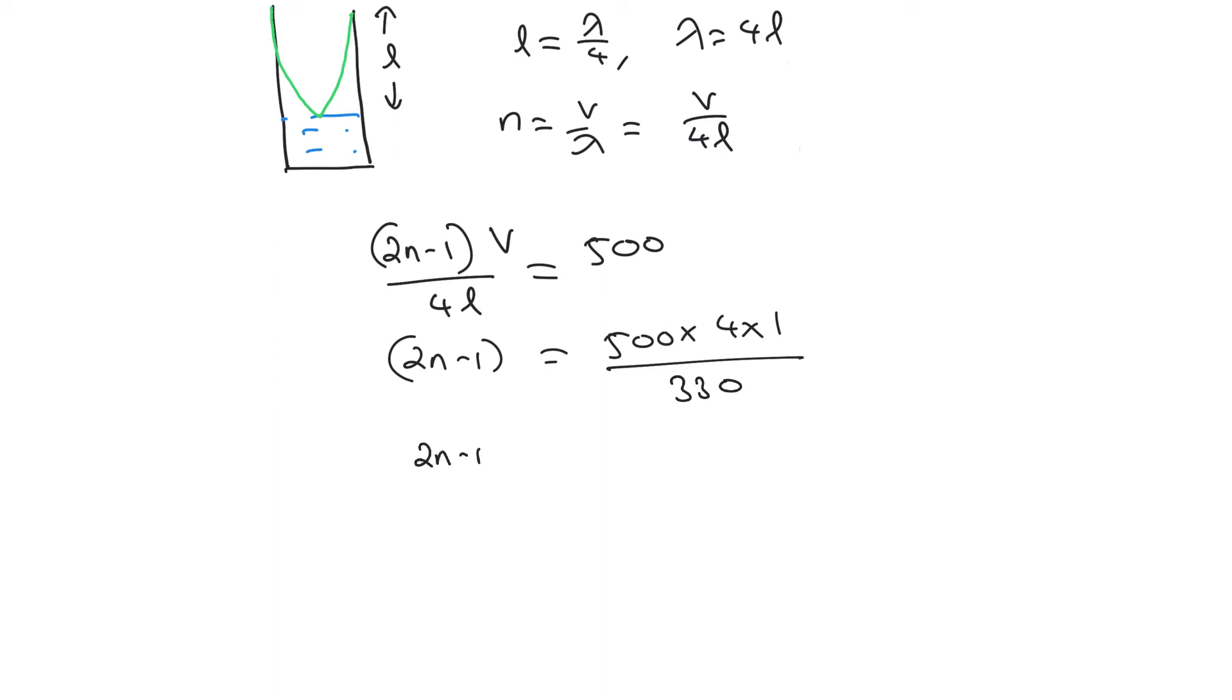We can write the value of 2N minus 1 is equal to 200 by 33, or you can write the value of 2N as equal to 200 by 33 plus 1, which is equal to 233 divided by 33.